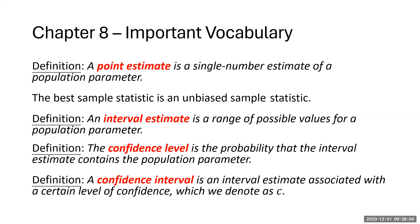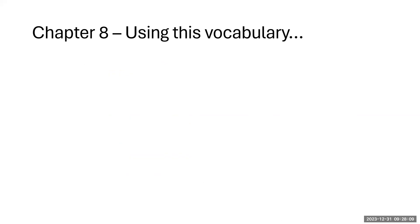The difference between interval estimate and confidence interval: an interval estimate is literally just a range of values — someone asks what the exam scores will be between and you say 80 to 90. Assigning a percentage to it — 'I'm 90% sure the average is going to be between 80 and 90' — makes it a confidence interval. Just saying 80 and 90 is the interval estimate; assigning a percentage makes it a confidence interval.